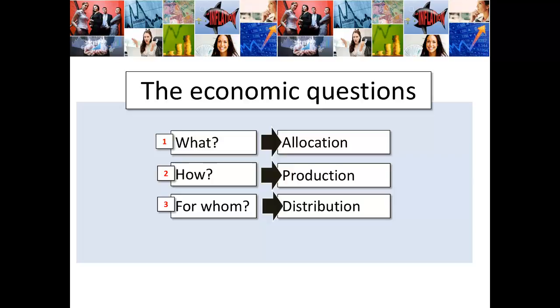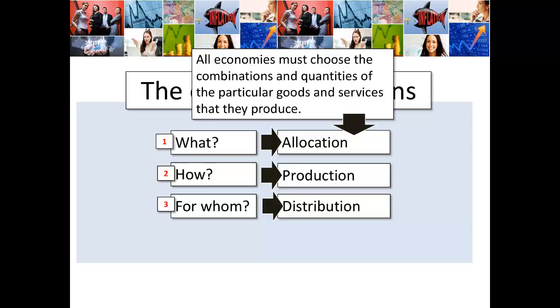And then we have the other fundamental economic question: For whom? Who gets the goods and services that are produced within an economy? All economies must choose the combinations and quantities of the particular goods and services that they produce. Are they going to spend lots of money producing guns for defence, tanks, armaments, air force planes? Or are we going to produce lots of consumer goods — iPads, TVs, cars?